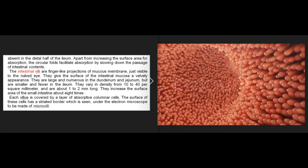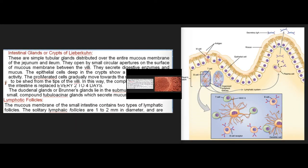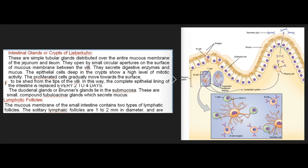Each villus is covered by a layer of absorptive columnar cells. The surface of these cells has a striated border, seen under the electron microscope to be made of microvilli. Intestinal glands, or crypts of Lieberkühn, are simple tubular glands distributed over the entire mucous membrane of the jejunum and ileum. They open by small circular apertures on the surface of the mucous membrane between the villi and secrete digestive enzymes and mucus.